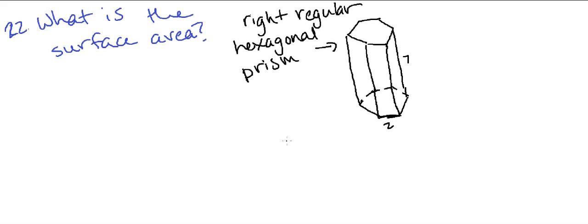The surface area is basically just the area of all of the sides added up. In this case, since there are six sides and they all have the same area, I like to break these problems down like that. I'm going to find the area of one rectangle and then multiply it by six to get the lateral area, which is just the area around the sides.